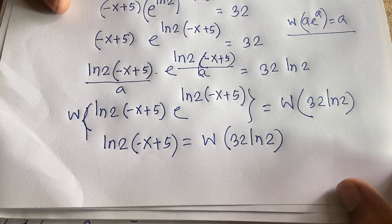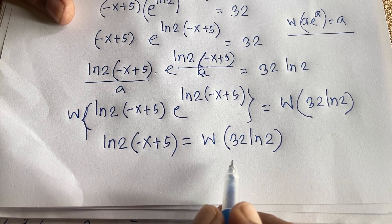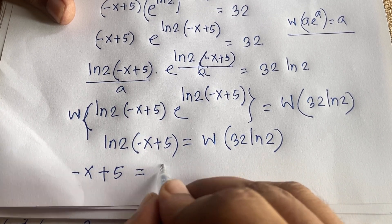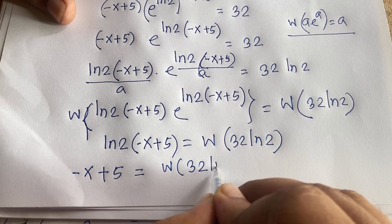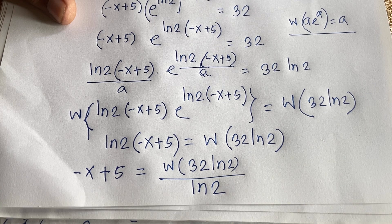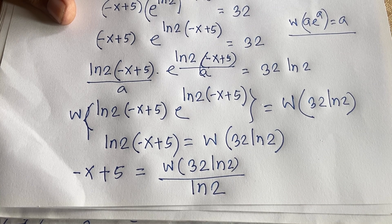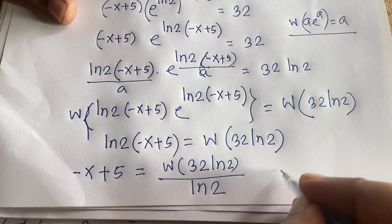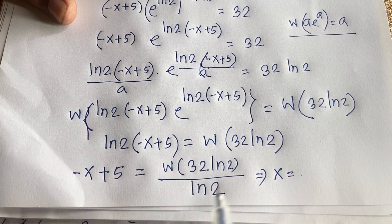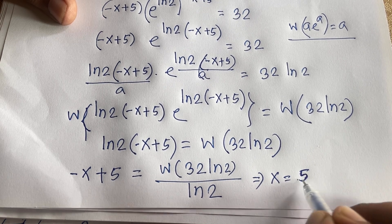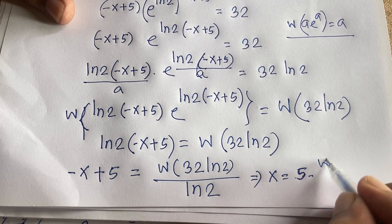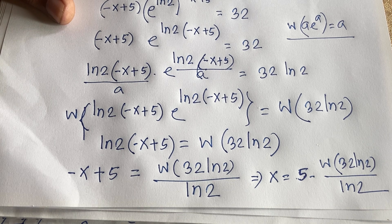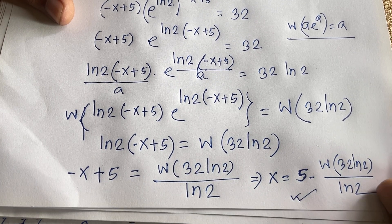Dividing both sides by ln 2, we find: minus x plus 5 equals W(32 · ln 2) over ln 2. So solving for x by moving it to the positive side: x equals 5 minus W(32 · ln 2) over ln 2. This is our final answer — the value of x in this math question.